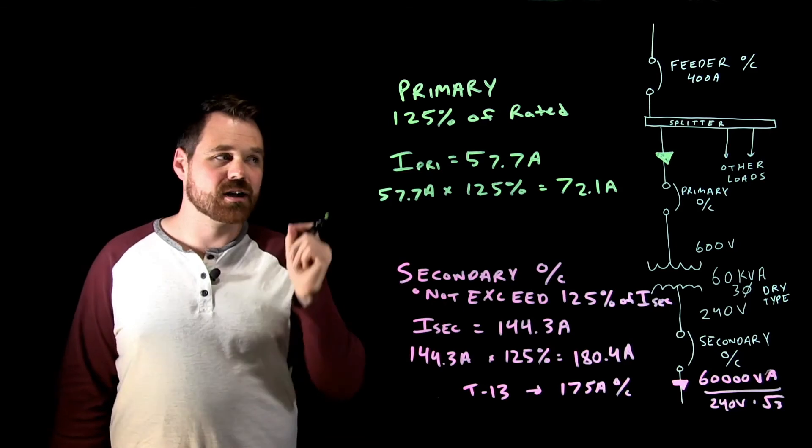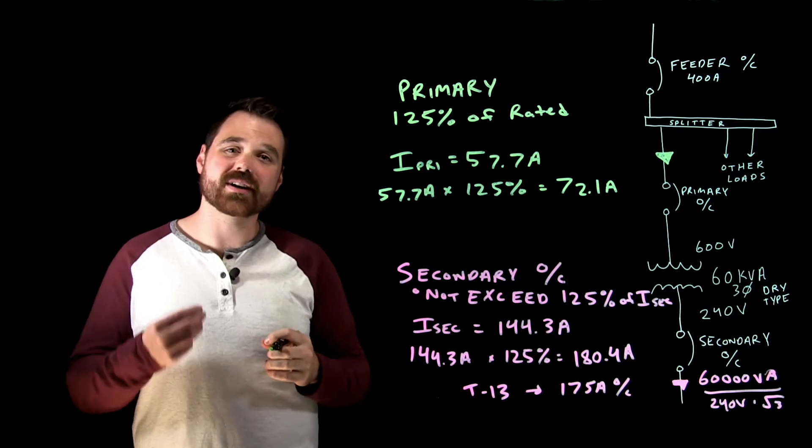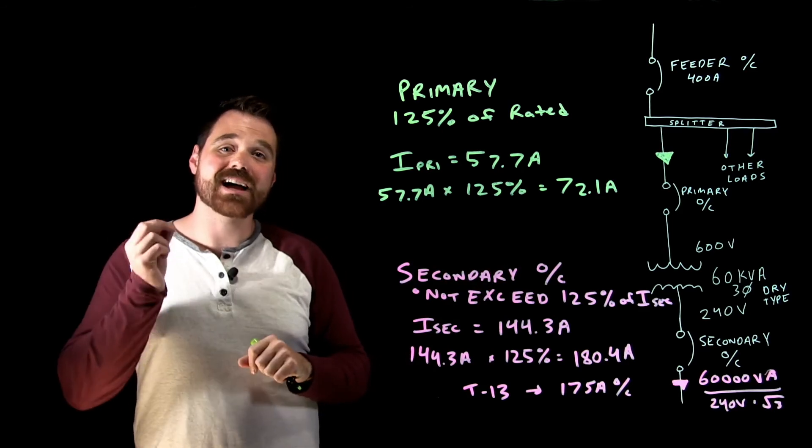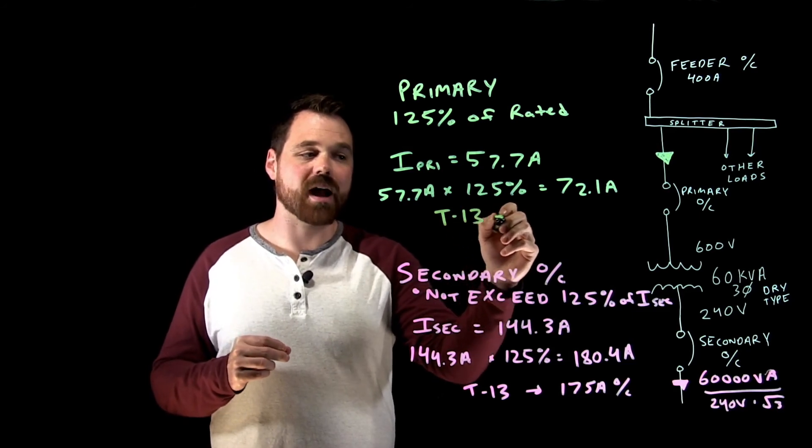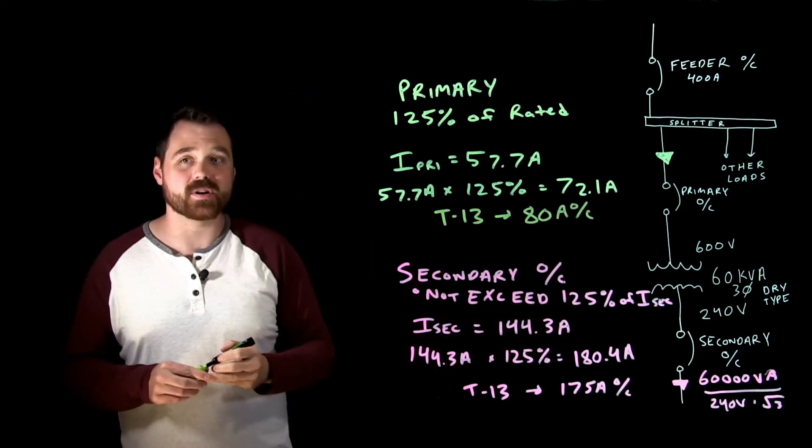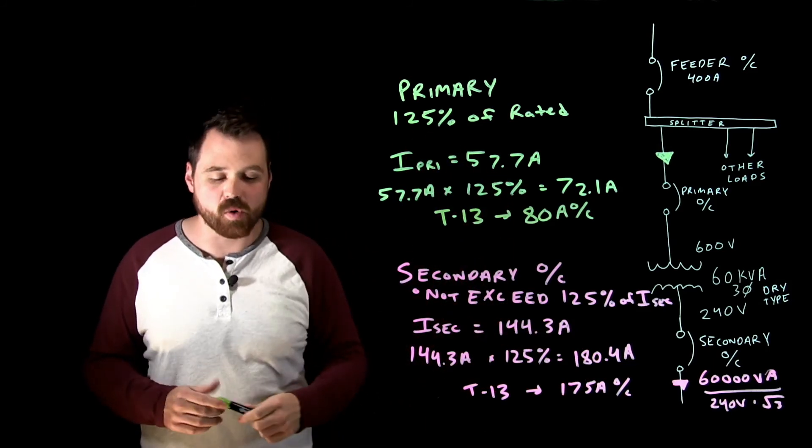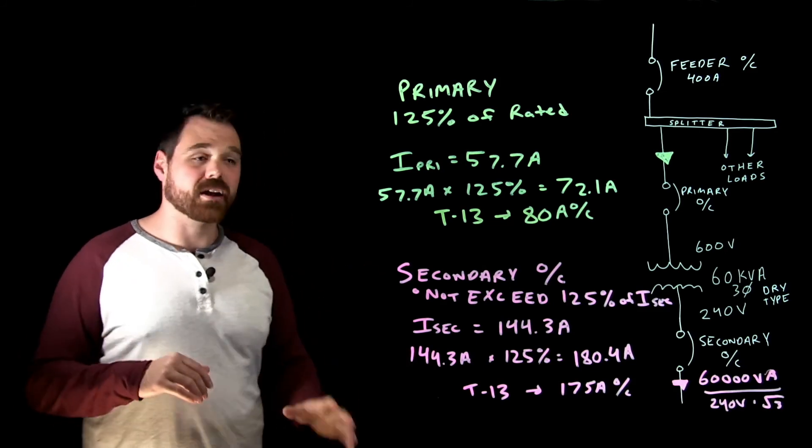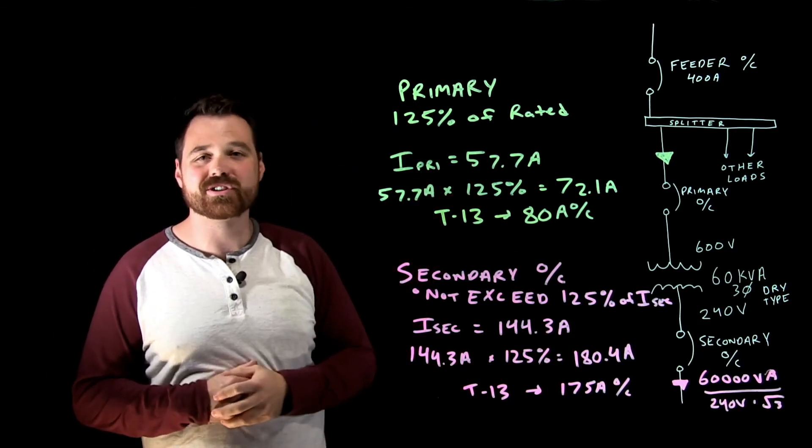Now here's the trick. The rule does tell us you cannot exceed 125 percent of the rating meaning I cannot exceed 72.1. But a few sub rules later it tells us if 125 percent of the rating of the overcurrent device is not available, the next higher size shall be permitted. So in this case on table 13 we're actually permitted to go up to an 80 amp overcurrent device. It's very different - with the secondary we were not permitted to go up, with the primary we are permitted to go up. If I had no secondary OC at all I would size my primary the exact same way.